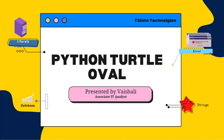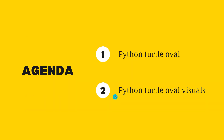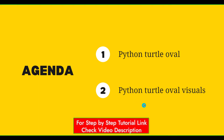Hello everyone. Today in this video we are discussing about how to create an oval shape in Python Turtle and the following are the topics that we are going to discuss. Firstly, we will learn how to create an oval shape in Python Turtle and after that we will discuss about how to create oval visuals in Python Turtle. So let's learn these topics with the help of an example.